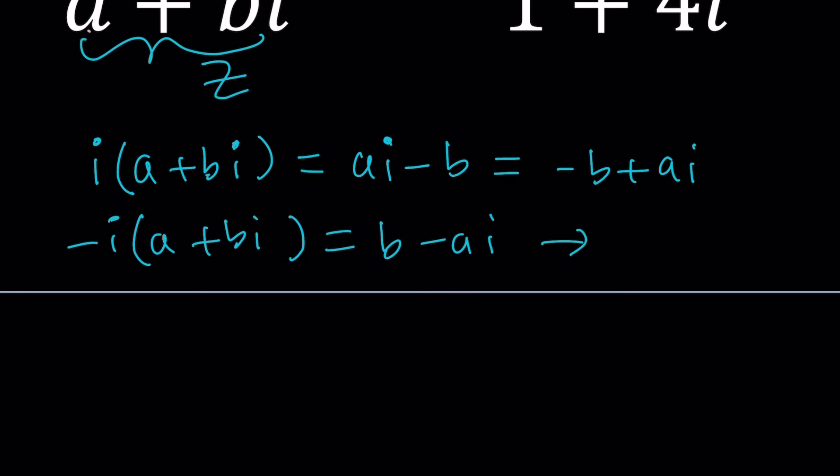You can conjugate this, right? So in other words in this case, B plus A I would be A plus B I multiplied by negative I and then you take the complex conjugate.